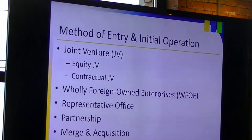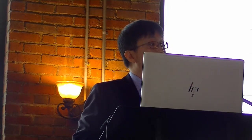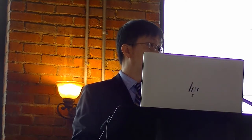The total investment is normally more than the registered capital — there is a mandatory ratio. For example, if your total investment is $3 million or lower, your registered capital should be more than 70% of that total investment amount. The difference between total investment and registered capital can be used for a loan from your parent company, and it's a very simple loan — you don't need to go through a government approval process.